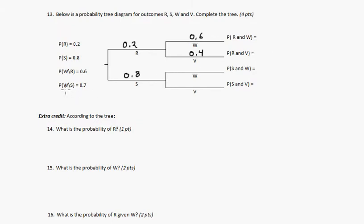And then here we see the probability of W given S, so that's this branch, it's 0.7. So this has to be 0.3. So now we can complete this.